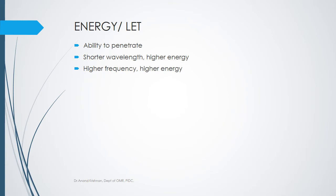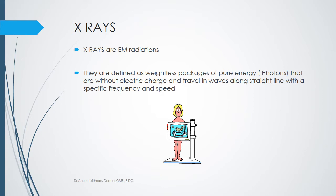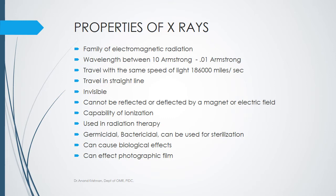The shorter the wavelength, the higher the energy and frequency. X-rays are electromagnetic radiations defined as weightless packages of pure energy — photons without electric charge that travel in waves along a straight line with a specific frequency. Properties of x-rays: they belong to the electromagnetic family, have a wavelength between 10 and 0.01 Angstroms, travel at the speed of visible light, travel in a straight line, are invisible, and cannot be reflected or deflected by electric or magnetic fields.